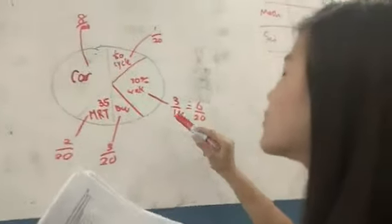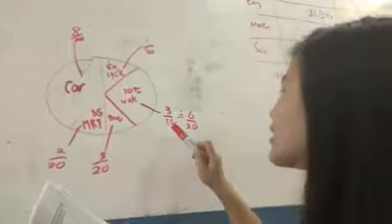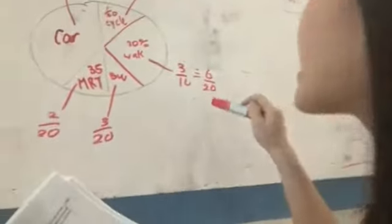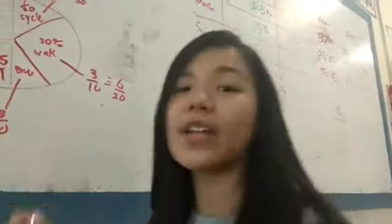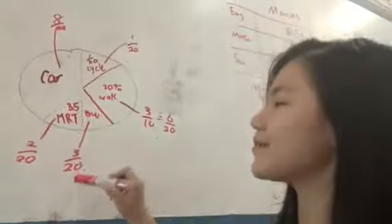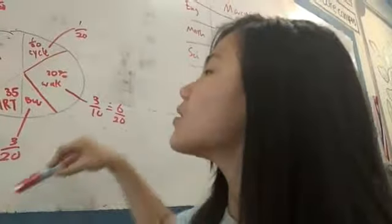Now, I'm going to convert this 30% into fractions, which is equal to 6/20. So when it becomes 6/20, and half of the pie chart is equal to 10/20, this becomes 3/20.